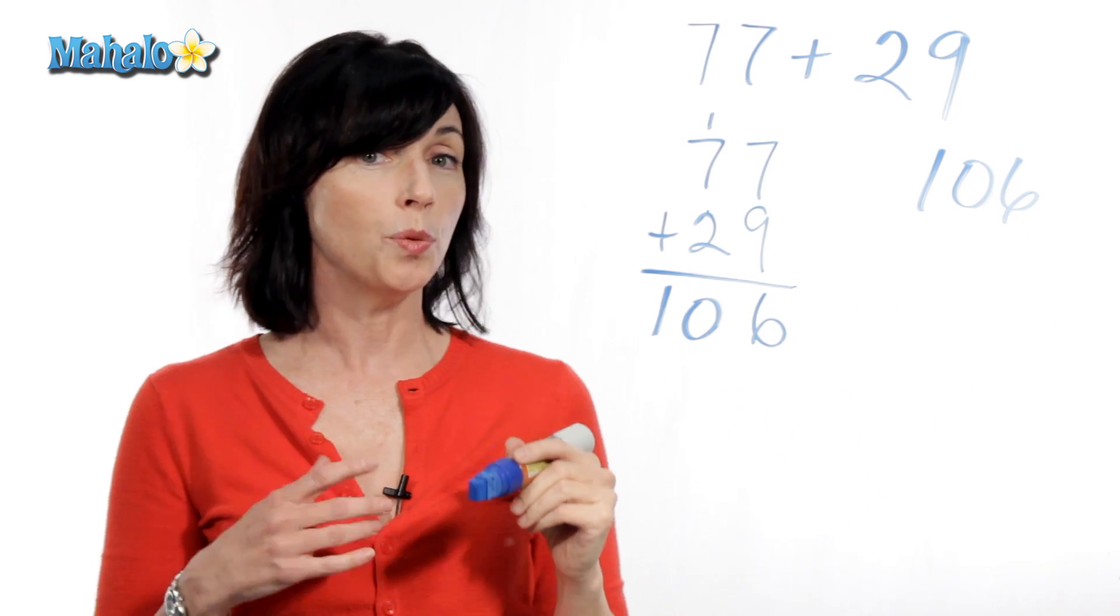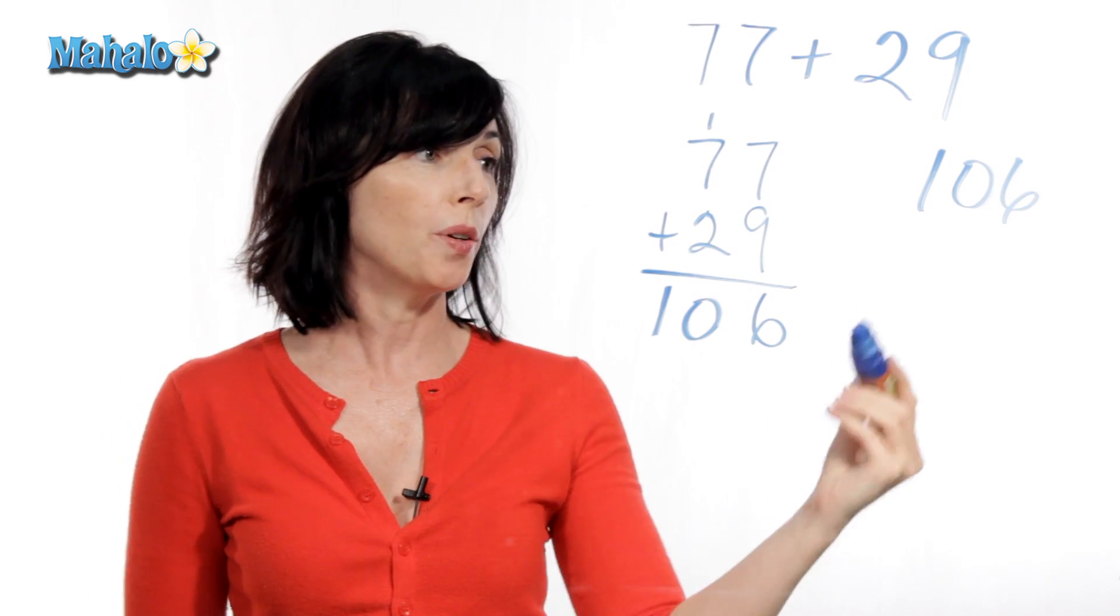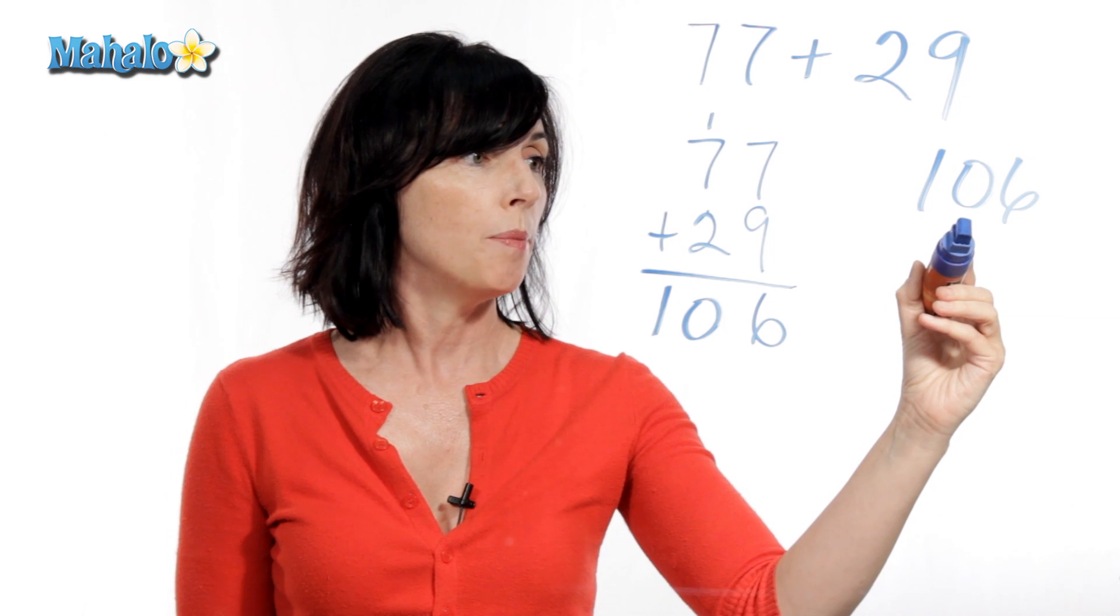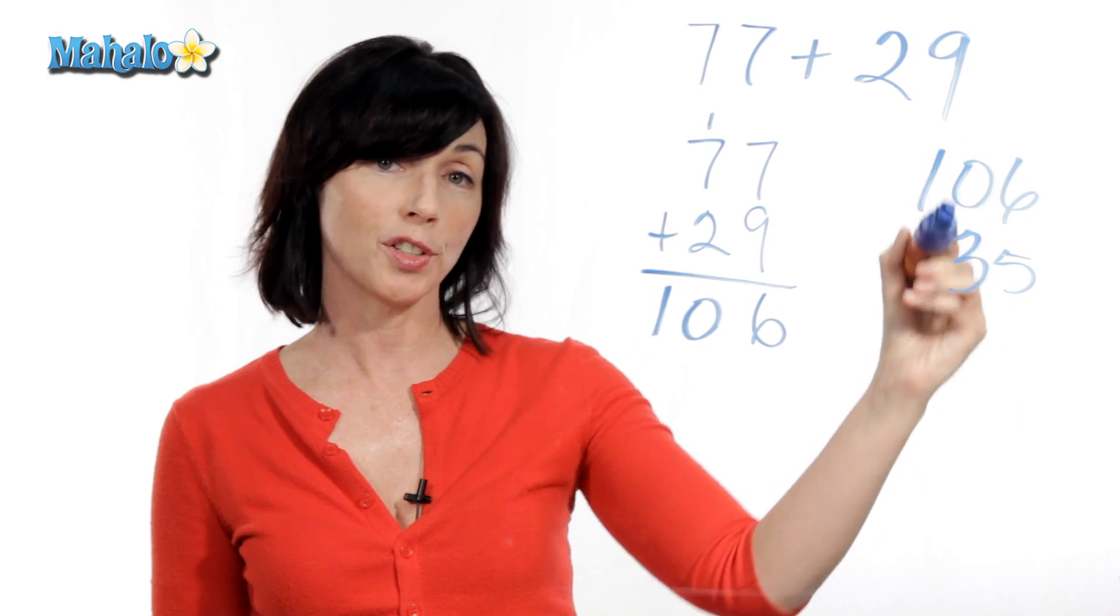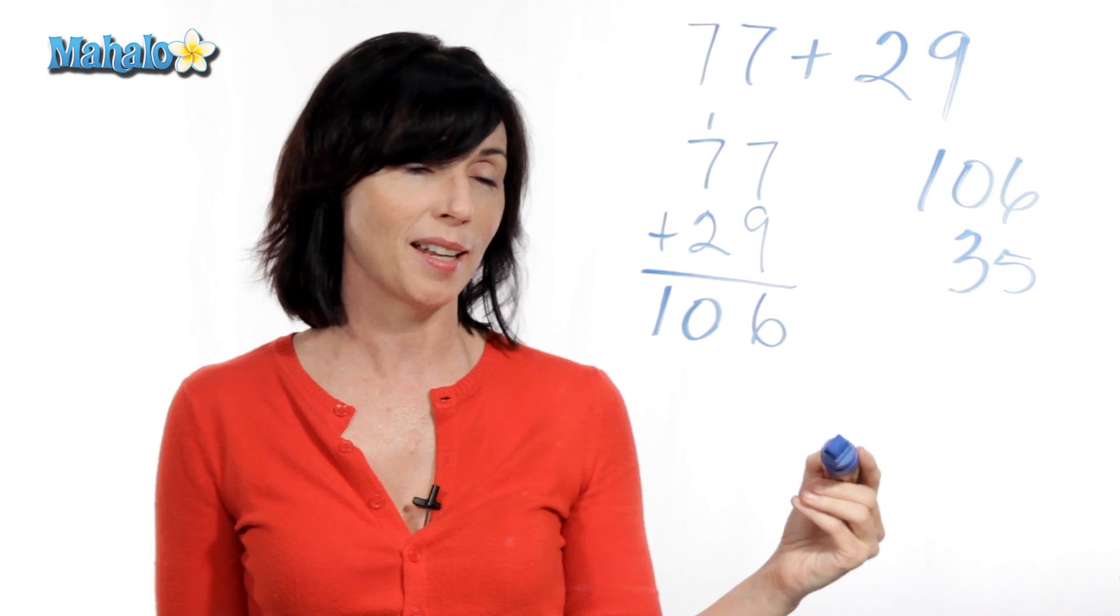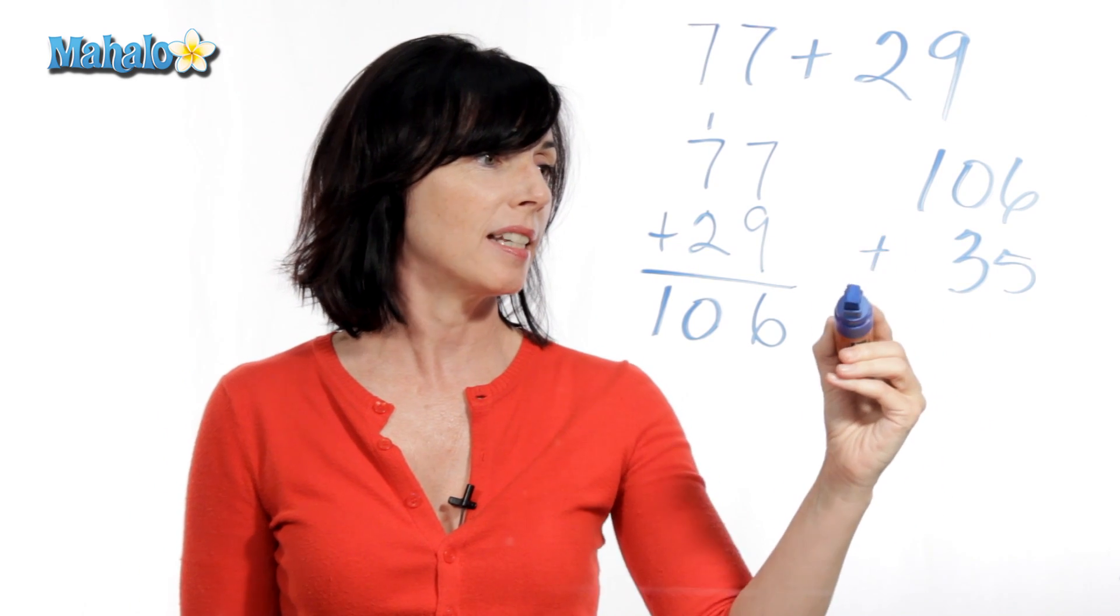Now, again, you want to make sure you get your numbers lined up correctly. So, if we want to add 35 to this, make sure that you line up your ones position and your tens position. And if you have a hundreds position, you would line that up too. So let's add these together.